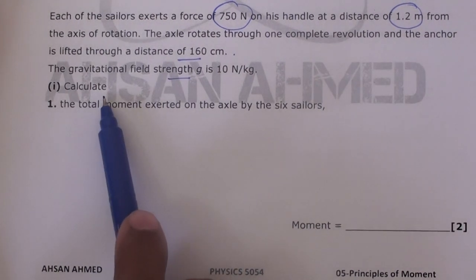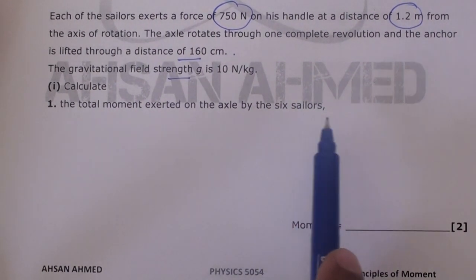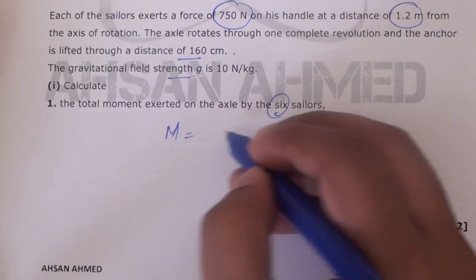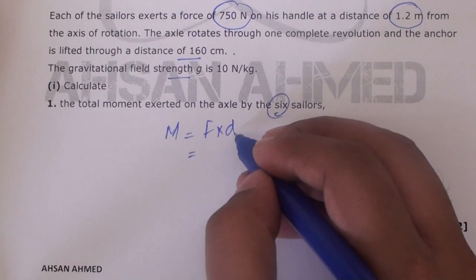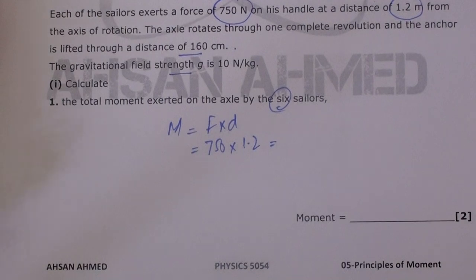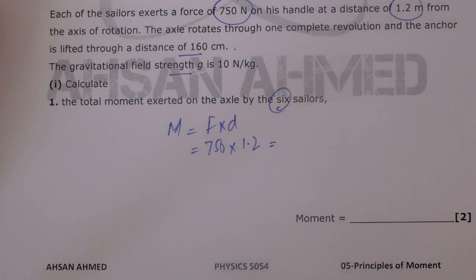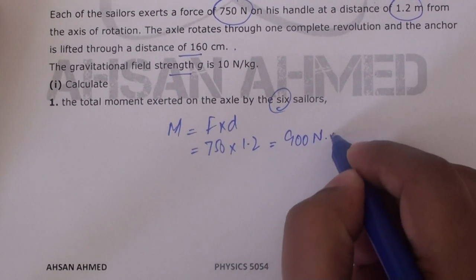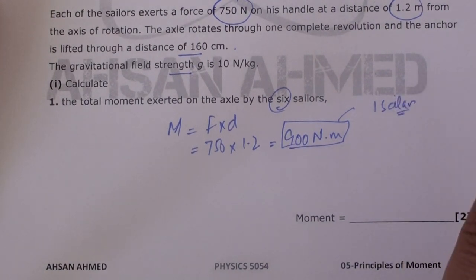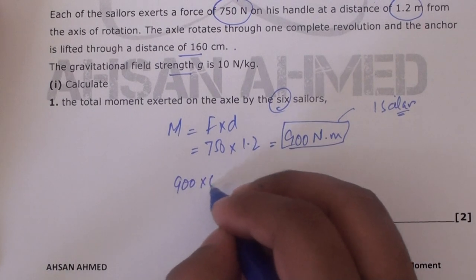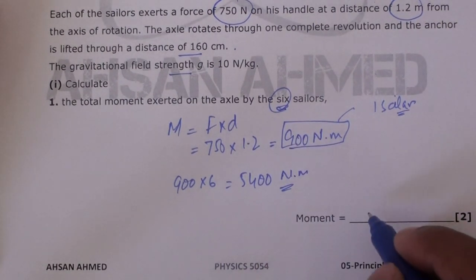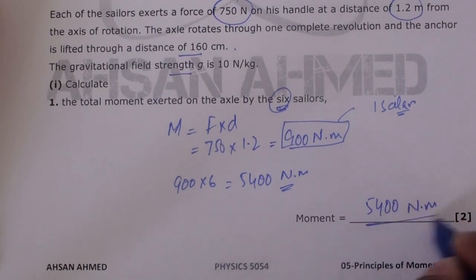The question asks: calculate the total moment exerted on the axis by 6 sailors. Let's find the moment by one sailor first. Moment equals force multiplied by perpendicular distance: 750 × 1.2 = 900 newton-meters for one sailor. For 6 sailors, we multiply by 6: 900 × 6 = 5400 newton-meters. So the total moment produced by 6 sailors is 5400 newton-meters.